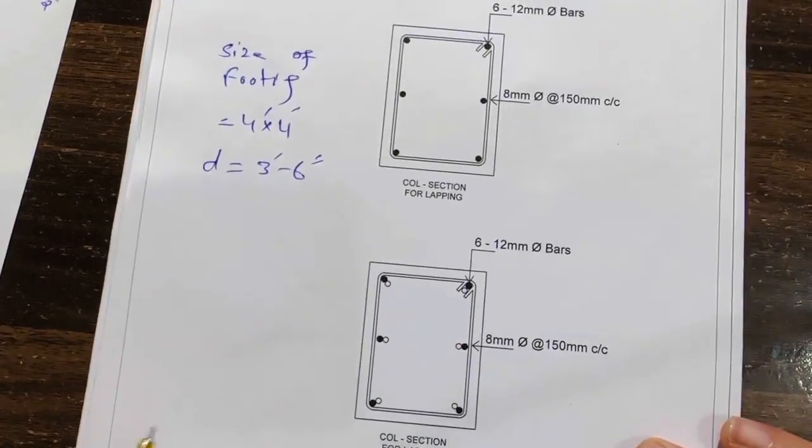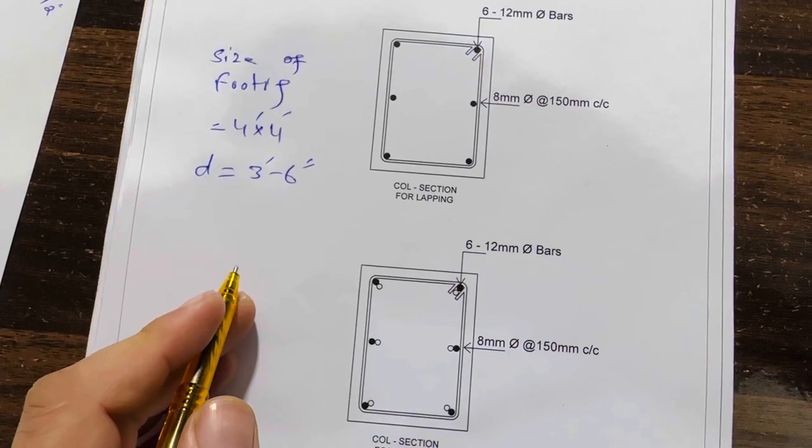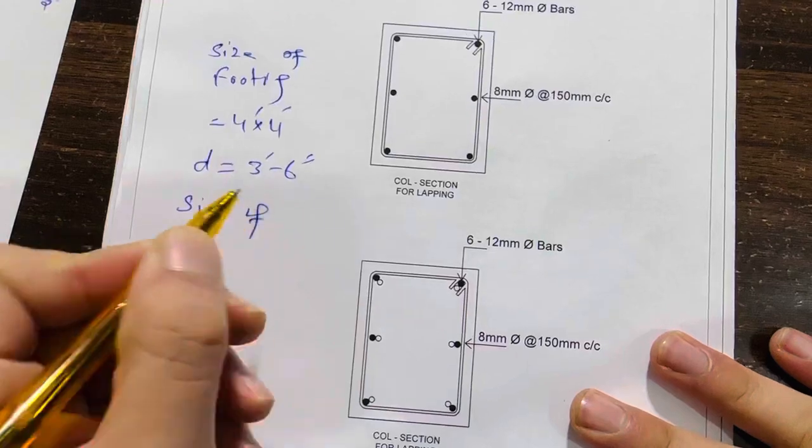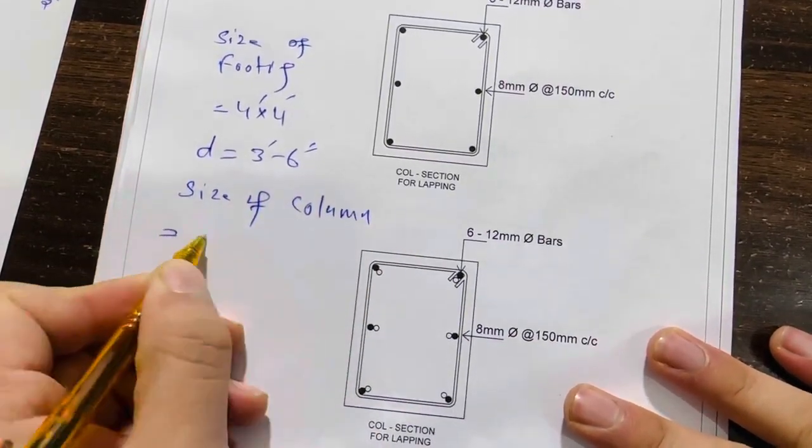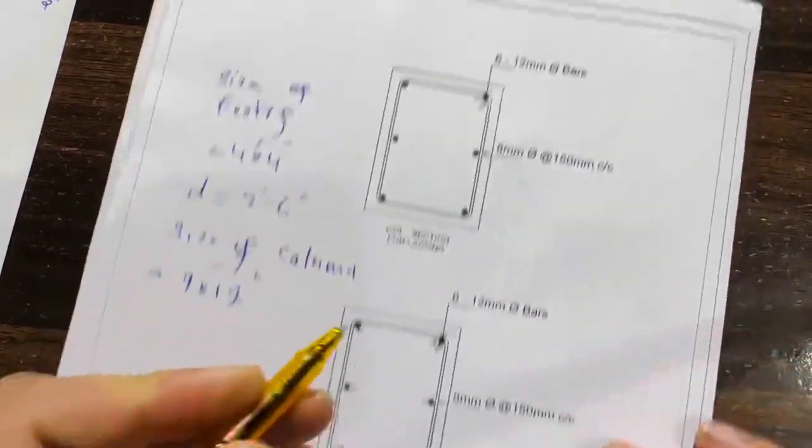This is for the footing. Next, the size of column is 9 by 12 inches. You can see here we have six numbers of steel rods.